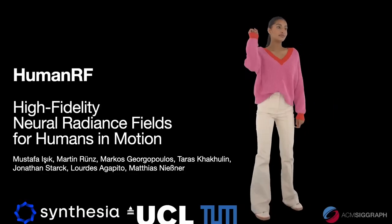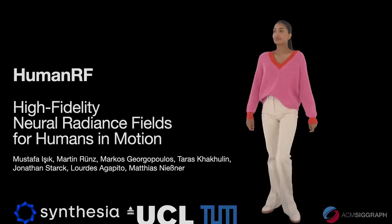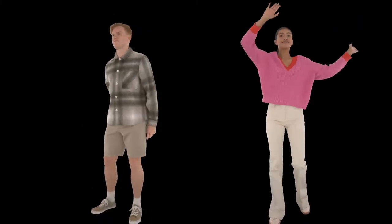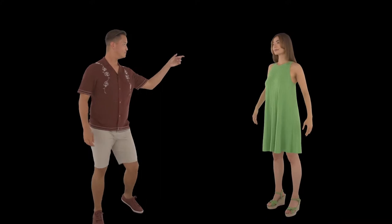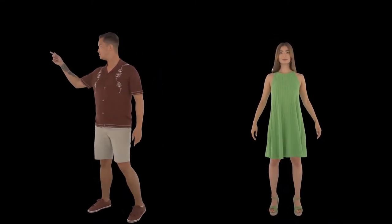We present HumanRF, a dynamic neural representation that captures full-body appearance of humans in motion from multi-view video inputs, and enables playback from unseen viewpoints. While most recent research focuses on synthesizing short videos at resolutions of 2 megapixels or lower, we address the challenge of capturing long sequences while operating at 12 megapixels. Here we show spatiotemporal renderings from new viewpoints, unseen at training, of some actors from our novel dataset, our additional contribution.